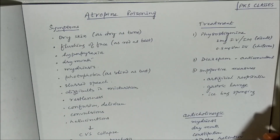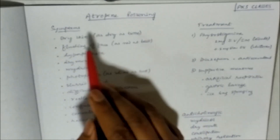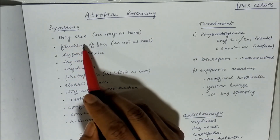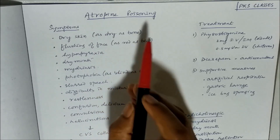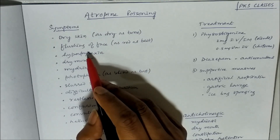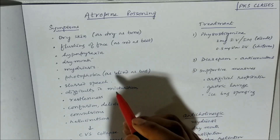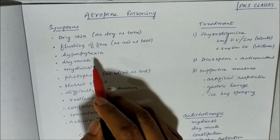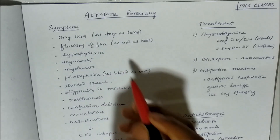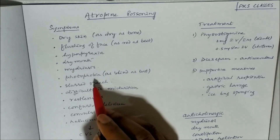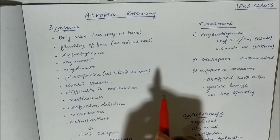When poisoning occurs — meaning when there is an overdose of atropine — it leads to serious symptoms. These include dry skin (as dry as bone), flushing of the face (as red as a beet), increase in body temperature (hyperpyrexia), and dry mouth.